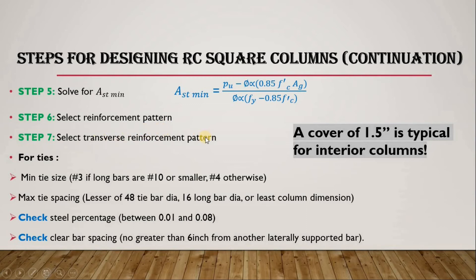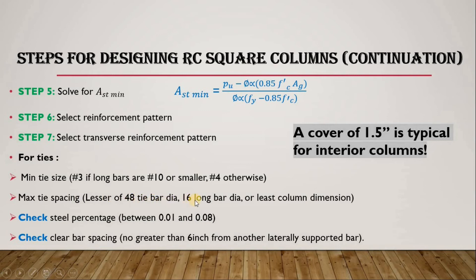Step seven: select the transverse reinforcement pattern — basically the ties. For the tie size, ACI states that if the longitudinal bar is No. 10 or smaller in diameter, use No. 3 ties; if larger than No. 10, use No. 4 ties. For maximum tie spacing, use the lesser of: 48 times the tie bar diameter, 16 times the longitudinal bar diameter, or the least lateral column dimension.